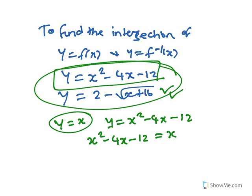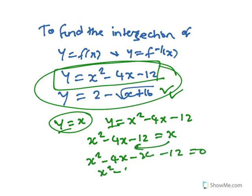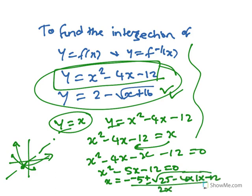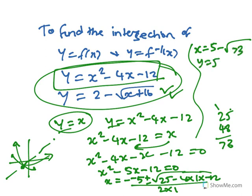So x squared minus 4x minus 12 equals x, because they both have the same y value at their point of intersection. Bringing the x over: x squared minus 5x minus 12 equals 0. Using the quadratic formula: x equals minus minus 5 plus or minus the square root of 25 minus 4 times 1 times minus 12, all over 2 times 1. That gives x equals 5 plus or minus the square root of 73, and we take the negative root. The y value will be exactly the same because they intersect on the line y equals x, so the x value equals the y value at the point of intersection.